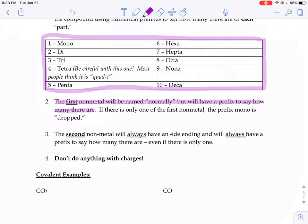If there's more than one, we'd have a prefix there to say how many there are. If there's only one of the first nonmetal, they drop that mono prefix. And I'll show you an example of that in just a second.